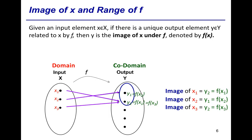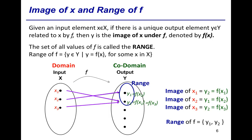If we pick up only the y's that have arrows pointing towards them, then we get the set of all values of f of x, or the set of all images. We call this set the range of f. In this example, the range of f equals the set of y1 and y2. In general, the range of f equals the set of all y belonging to codomain Y such that y equals f of x for some x in domain X.